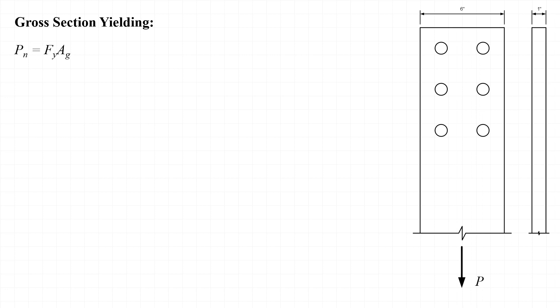The first limit state that we'll evaluate is that of gross section yielding, or tension yielding as it's known in the AISC specification. The nominal strength with respect to gross section yielding is P sub n equal to F sub y times A sub g. And we'll evaluate this on the gross cross section of the member. That is a section that's about one and a half to two times the major dimension of the member away from the connection. So in this case, the major dimension is six inches. So we draw that section about nine to 12 inches away from the first row of bolts where we can expect there to be a uniform distribution of stress on the section.